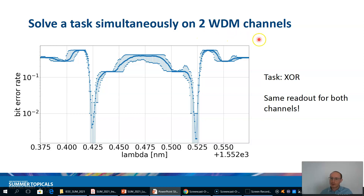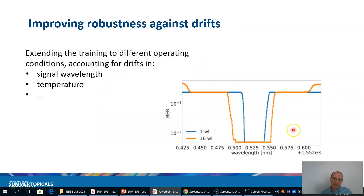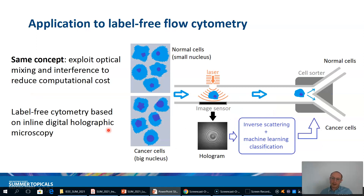Another interesting feature is that you can solve a task simultaneously on two WDM channels at two different wavelengths, using the same readout weights for both wavelengths to perform, for example, the XOR boolean operation on both waveguides at the same time. You can also extend the training to different operating conditions to account for drift in signal wavelength and temperature, making the system more robust.